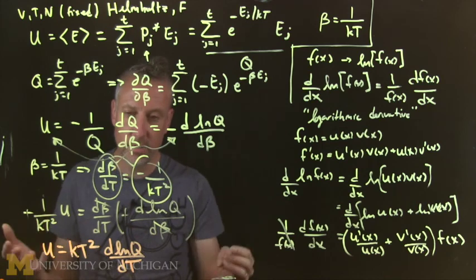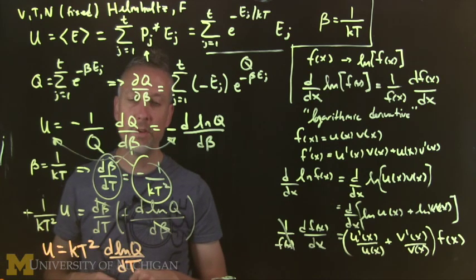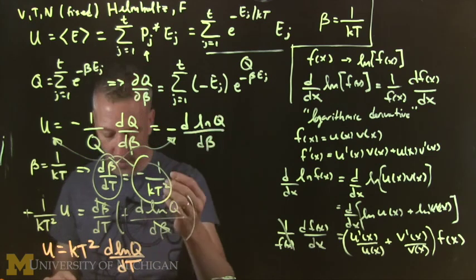Usually temperature is the parameter that we're interested in, since it's the thing that we measure, but you could always invert the temperature. That's no problem. So sometimes you'll want it in terms of beta, sometimes in terms of temperature. It depends a little bit on what the goal is.